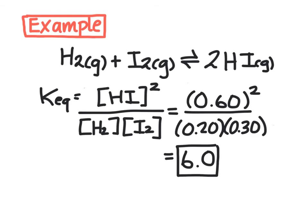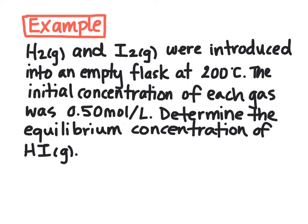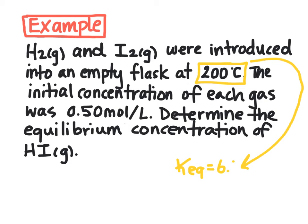The size of this equilibrium constant is above 1, so our KEQ value is greater than 1, meaning that this equilibrium position is product-favored. We're going to extend this example further. Hydrogen and iodine gas were introduced into an empty flask at 200 degrees Celsius. This is the same temperature as the previous example, meaning we can carry the original K value forward: KEQ equals 6.0. The initial concentration of each gas was 0.5 moles per liter, and we're trying to determine the equilibrium concentration of HI.